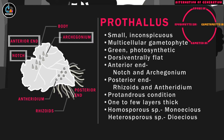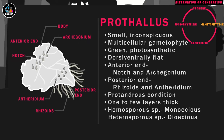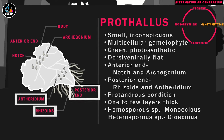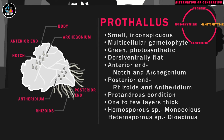The anterior end of the prothallus has a notch and bears the female sex organs, archegonium, while the posterior end bears the male sex organs, antheridium. From the posterior end, many thread-like structures called rhizoids also arise to absorb water and minerals. The monoecious prothallus develops in homosporous species of pteridophytes.